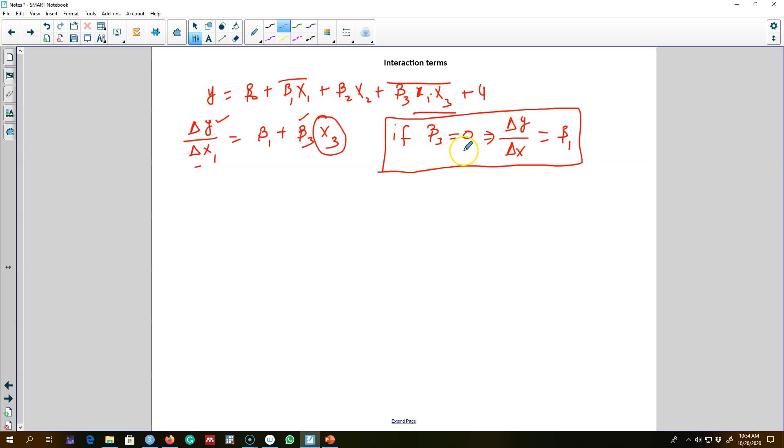But if there is an interaction, that is if beta 3 is not 0, the impact of x1 on y will depend on the value of x3. The interpretation in this case is a little tricky, and the standard errors of this type of effects need to be recalculated.